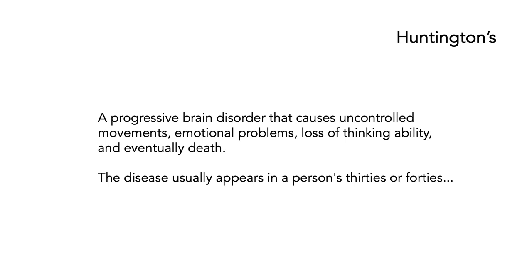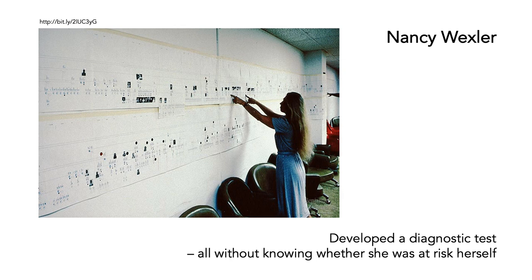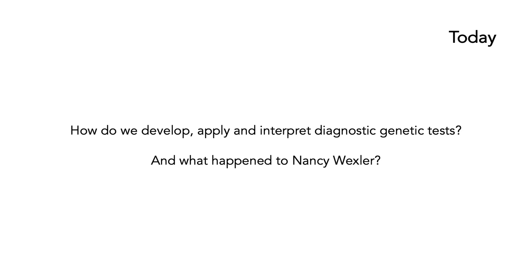Before we go into the detail, let's start with some background using Huntington's disease as an example. Huntington's is a progressive brain disorder that causes uncontrolled movements, emotional problems, loss of thinking ability, and eventually death. The disease usually appears in a person's 30s and 40s, so it's a very tragic disorder. The person who found the genetic basis was Nancy Wexler, who developed the diagnostic test without knowing whether she herself was at risk — her mother had the disease. Today, genetic tests like those developed by Nancy Wexler are used all the time.